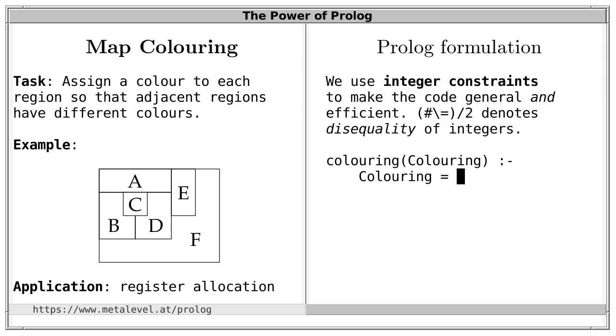There are several possibilities and a quite straightforward one is to use a list of elements, where each element corresponds to one of the regions of the map and shall denote the color of that region. Let us use the labels as variable names. The variable A denotes the color of region A, the variable B denotes the color of region B and so on. We will actually use integers instead of colors, so that we can benefit from constraint propagation. A good naming convention for lists is to use variables that end with an S to denote plural. Let us call this list Cs.